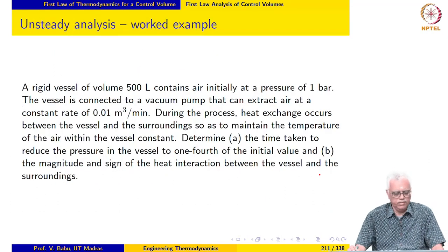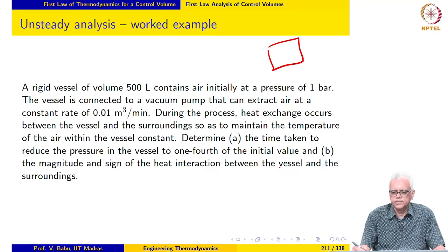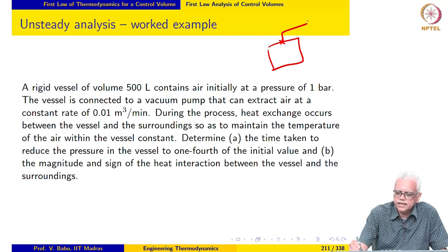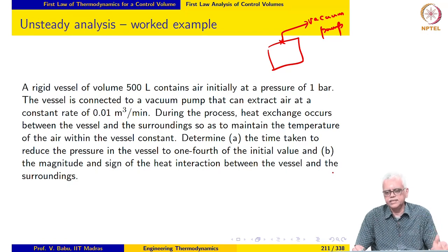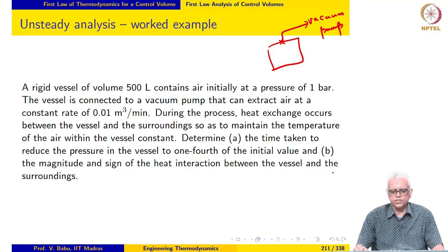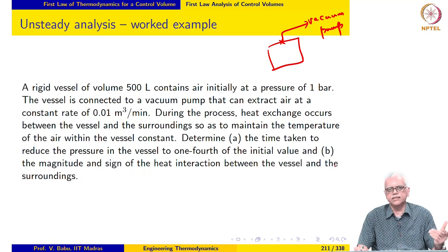The next example involving unsteady analysis involves a rigid vessel of volume 500 liters containing air at a pressure of 1 bar. We connect this to a vacuum pump via a valve. The vacuum pump extracts air at a constant volume flow rate of 0.01 m³/minute. Heat exchange also occurs between the vessel and the surroundings to keep the temperature of the air within the vessel constant. We must determine the time taken to reduce the pressure to one-fourth of the initial value and the magnitude of the heat interaction.